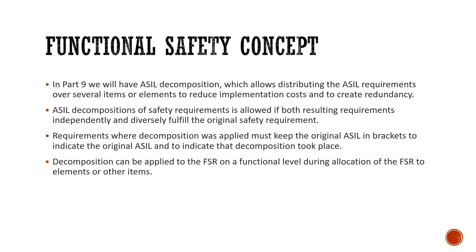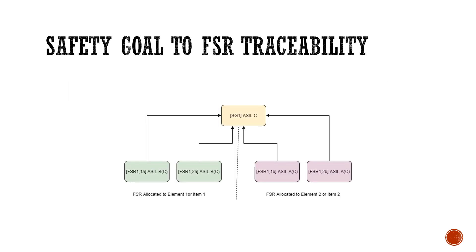Decomposition can be applied to the functional safety requirement on a functional level during allocation of the FSR, as shown with two elements or other items. In the sample, one safety goal is represented as SG-1 with an ASL level C. From it, four different functional safety requirements are extracted: FSR 1-1A and FSR 1-2A are for Element 1.